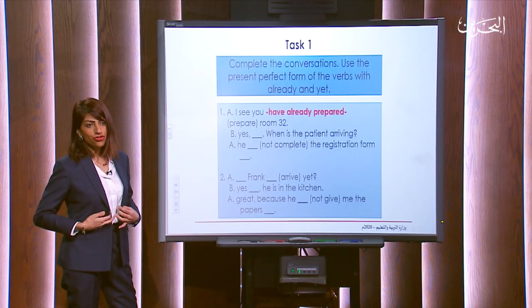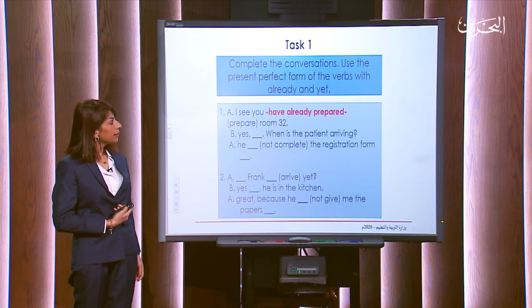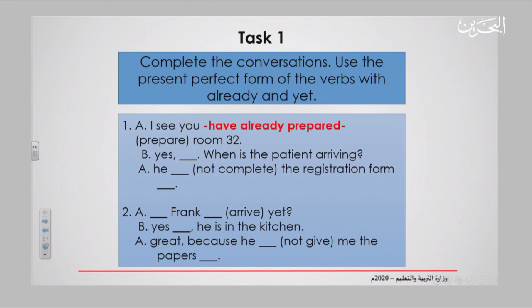Let me give you a task to check your understanding. Complete the conversations using the present perfect form of the verbs with 'already' and 'yet'. You have two conversations between A and B. For example: 'I see you have already prepared room 32' — the verb in brackets is 'prepare', which you convert to present perfect. The first one is done for you. Go through the other tasks, and we will check the answers together.